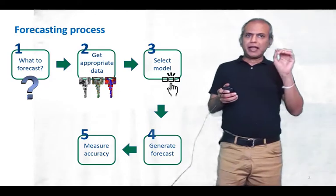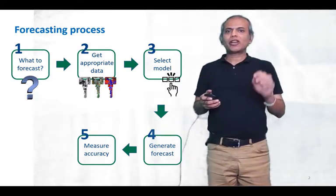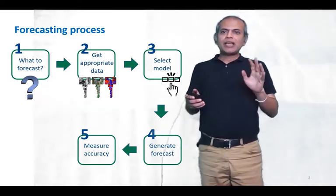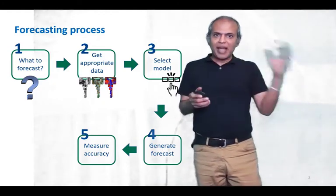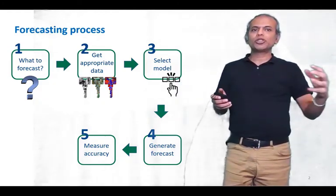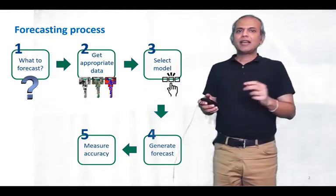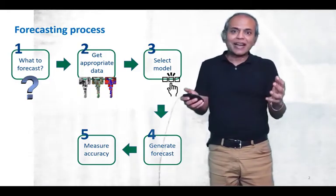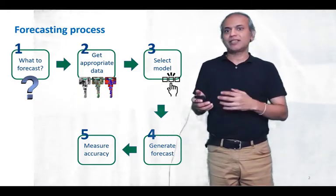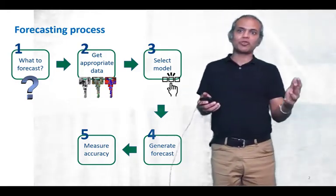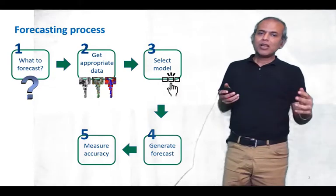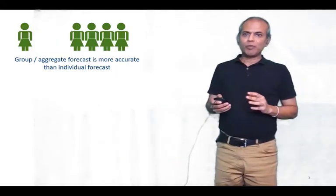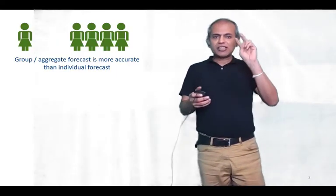The idea of what to forecast covers two things. Number one is the span of the forecast — how long into the future to forecast. And number two is the scope of the forecast — what exactly are we forecasting? Is it individual products or groups of products? Let's jump into this topic.